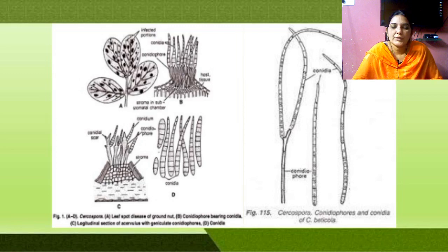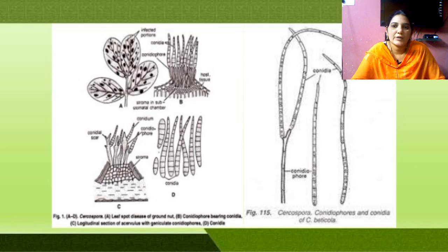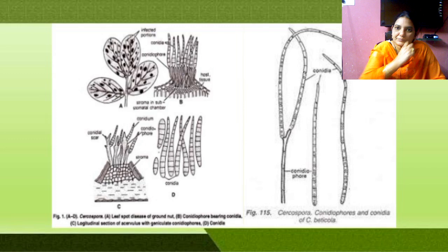The mycelium produces many conidiophores. The conidiophores are coenocytic, having many nuclei. At the top of the conidiophore, a round-shaped structure called a conidium is formed, and one nucleus enters into the conidium. After complete formation, they form so many conidia, creating a chain-like structure.